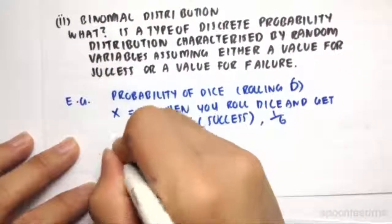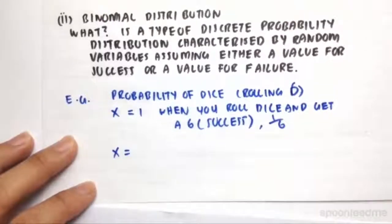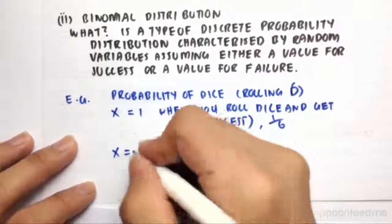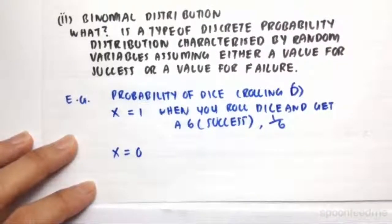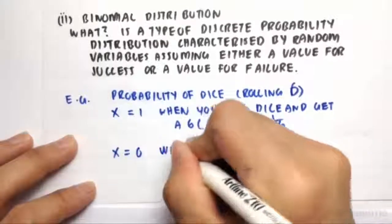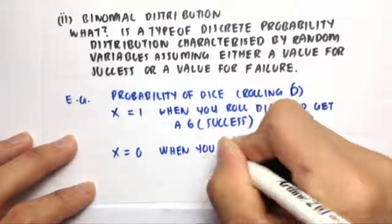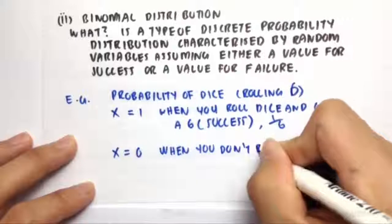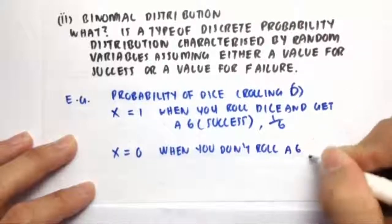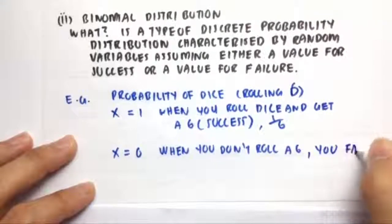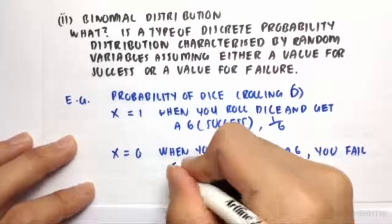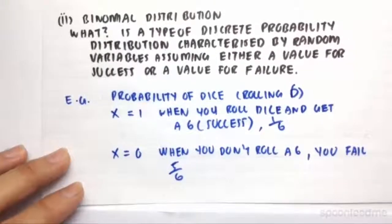For every single other outcome - rolling a 1, 2, 3, 4, or 5 - we would give a random variable x equal to 0, and that's when you fail. When you don't roll a 6, you fail, and that would have a probability of 5 in 6.